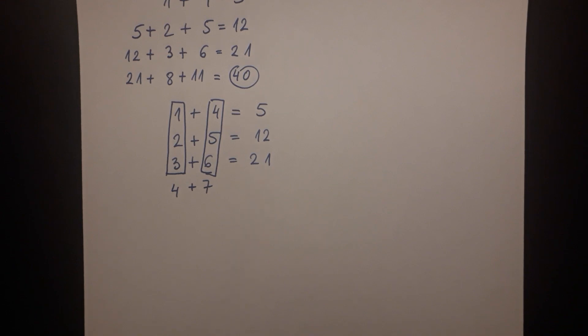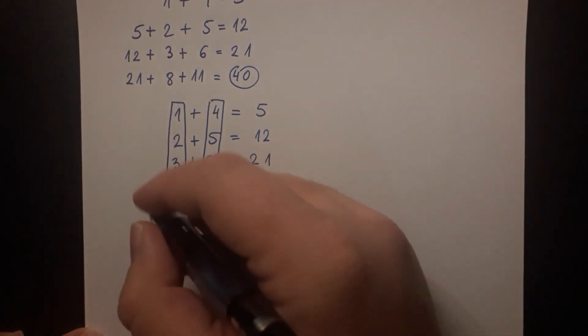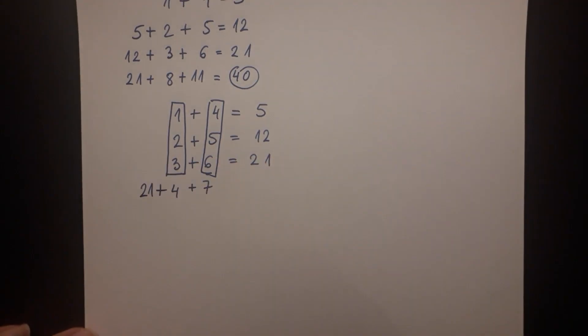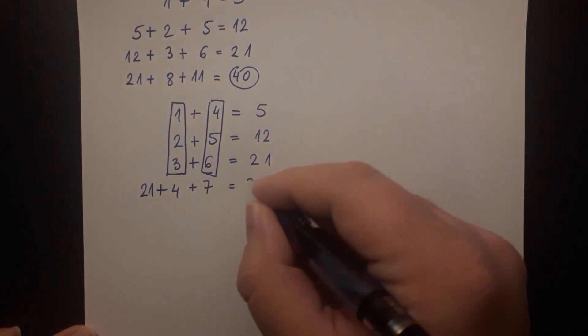Now when you take the previous result of 21 and add it to the line of completed pattern 4 plus 7, you get the answer of 32.